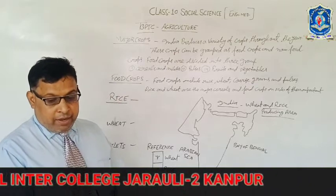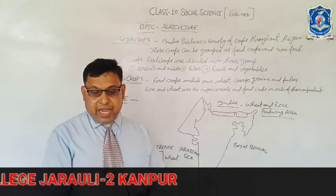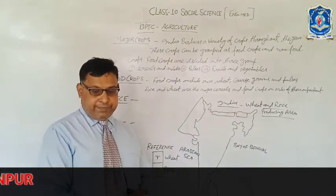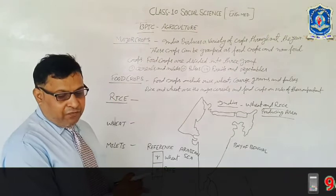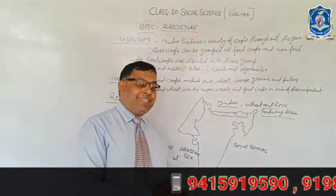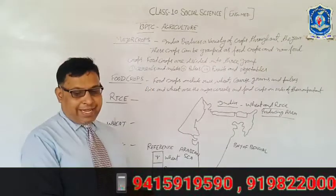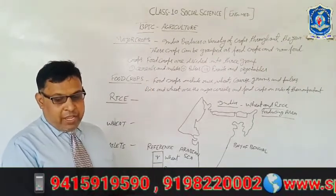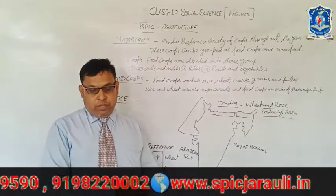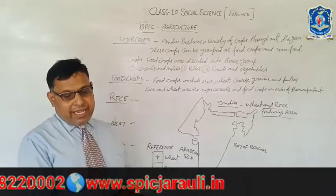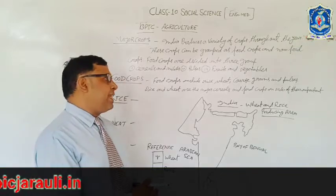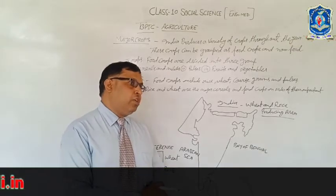Aman, Boro, and Aus varieties are harvested in Assam, West Bengal, and Odisha respectively. Geographical factors required for the growth of rice — warm and humid climate is needed. बहुत ज़्यादा गर्म और आर्द्र जलवायु इसके लिए आवश्यक होती है।